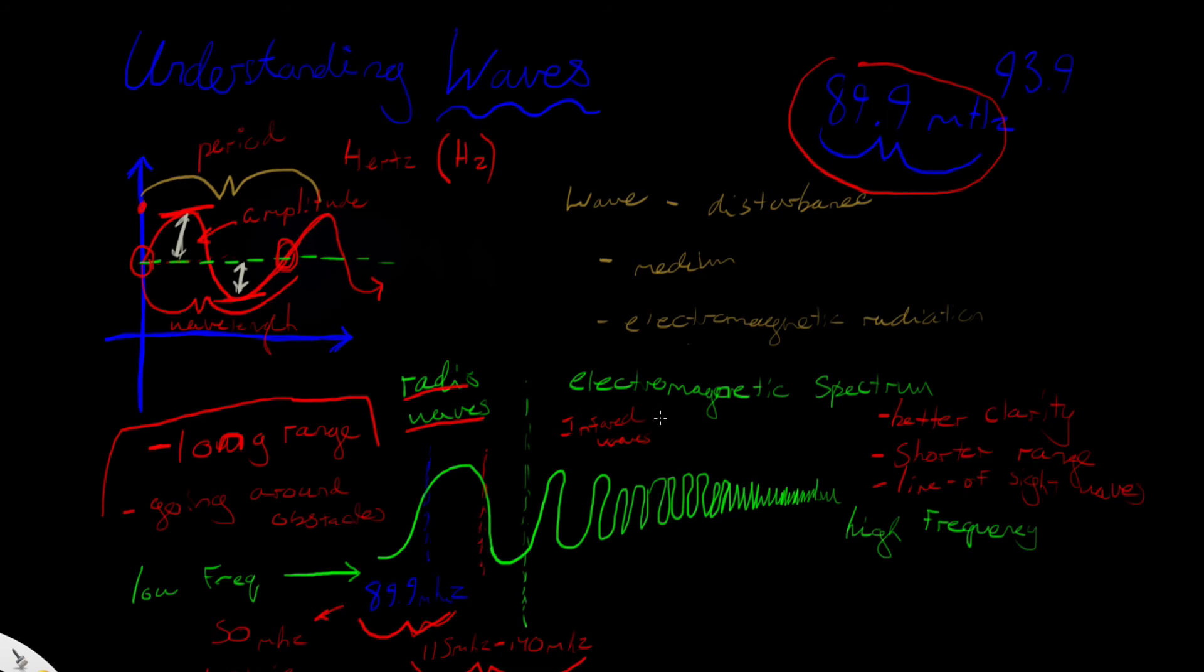If we go higher than infrared waves, we get to a section of the electromagnetic spectrum that's very important to us. I'm sure you know why, because this is called visible light. And visible light is actually what you see. You see things because light reaches your eyes. Infrared waves are slightly beyond what we can see with our eyes, but then once we get into visible light, we can actually see.